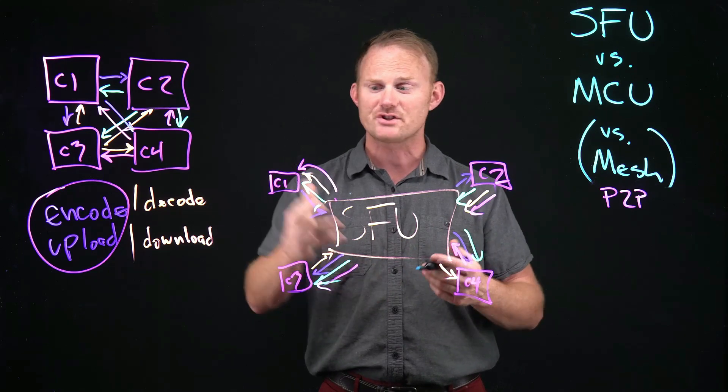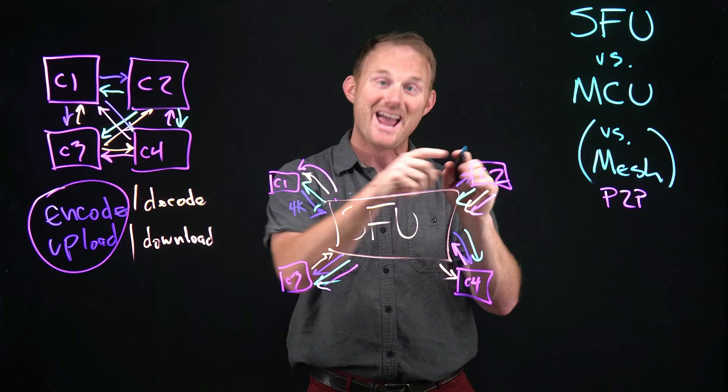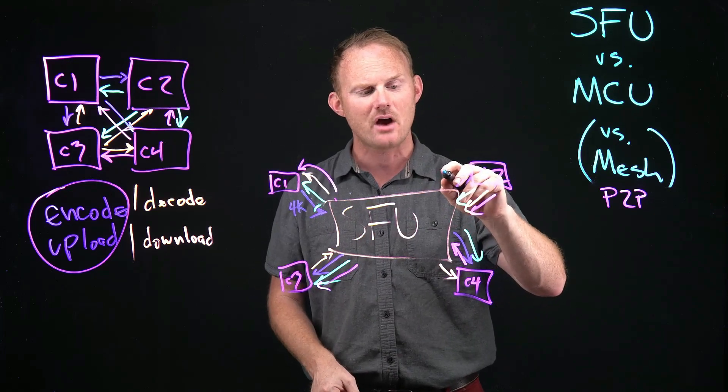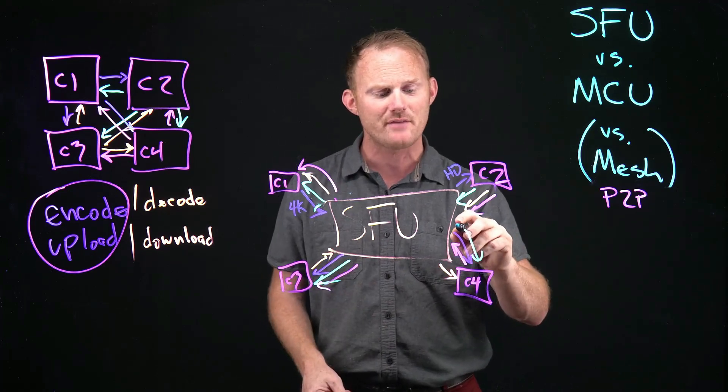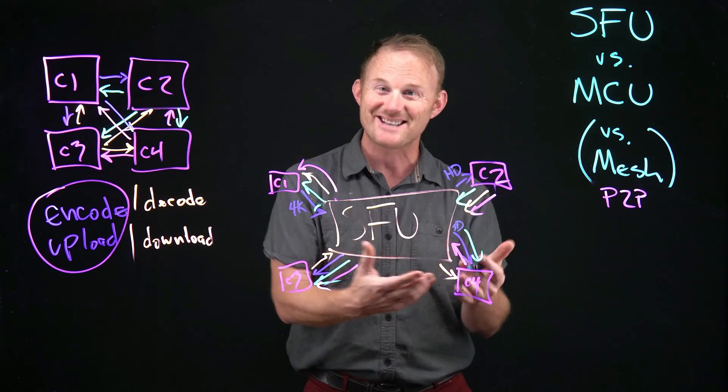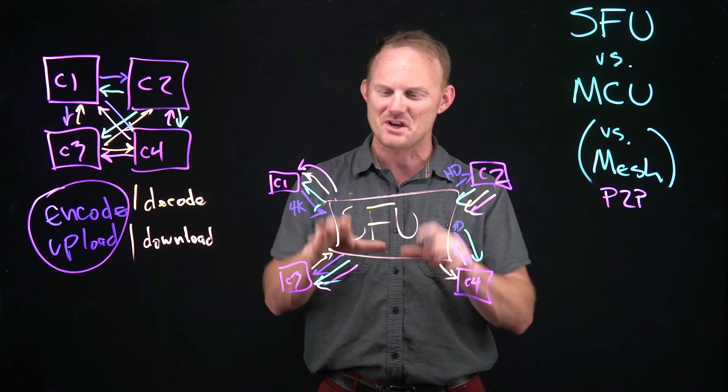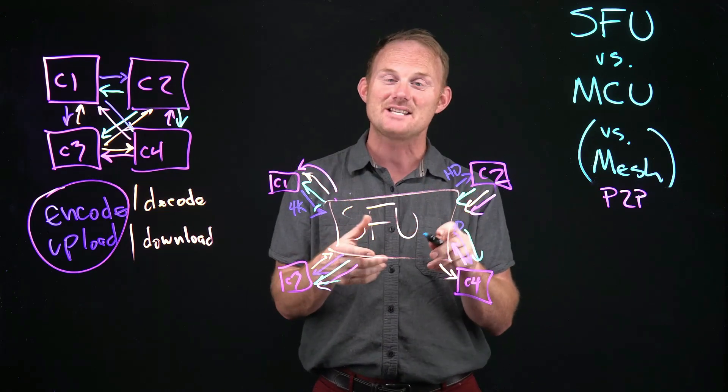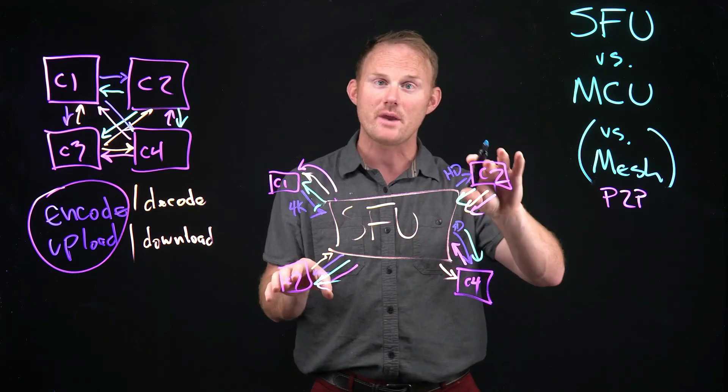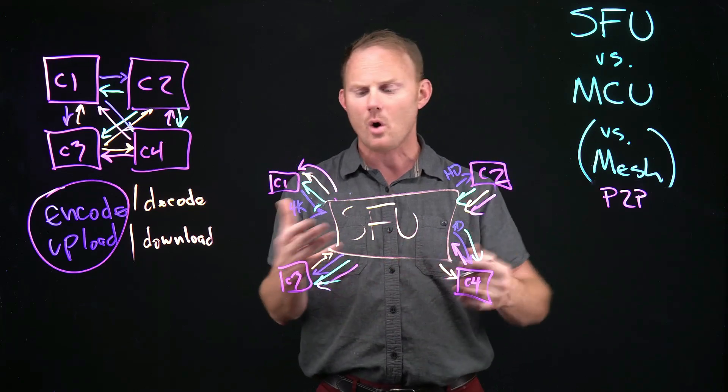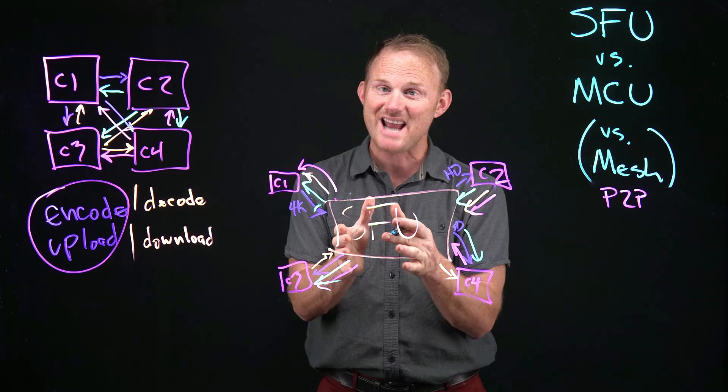In addition to that, able to downgrade a feed. So if C1 is sending up, we'll say 4K, that's what's going up in blue, and C2 has a really weak connection, it could downgrade it to just say HD. Or maybe if C4 is a cell phone with a weak connection, it might even go all the way down to standard definition. Now, SD on a big screen looks terrible, but it's better to see something than nothing. I guess those are decisions that you can make. But the SFU has the ability to downgrade. If it needs to, it can also transcribe. So if there's a particular codec that's going to be more efficient frame rate, etc., all of that stuff can be fixed inside of the media server, the selective forwarding unit. So that's an SFU.